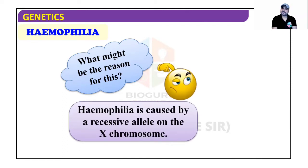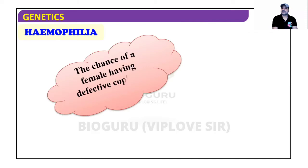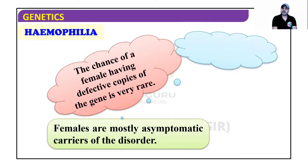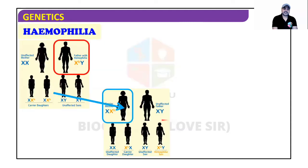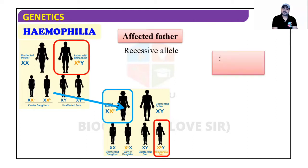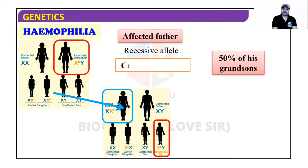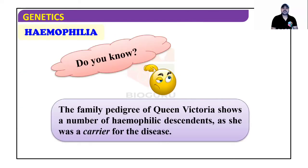Hemophilia is expressed when both copies of the gene are defective; otherwise females will be carriers. Females are mostly asymptomatic carriers of the disorder. An affected father will transfer the allele to 50% of his grandsons, and his daughters will be carriers. Queen Victoria's family pedigree shows numerous hemophilic descendants as she was a carrier.